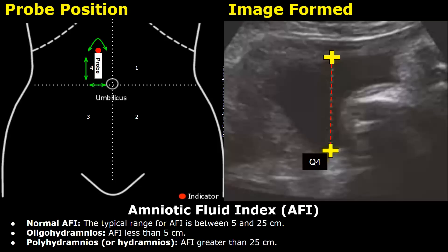If the AFI is below 5 centimeters, it indicates oligohydramnios. If it is more than 25 centimeters, it indicates polyhydramnios.